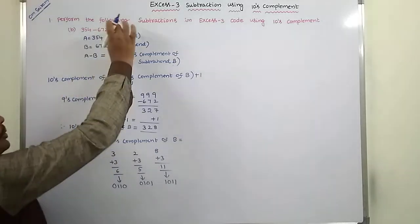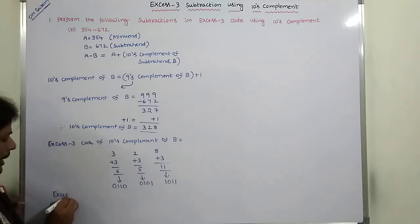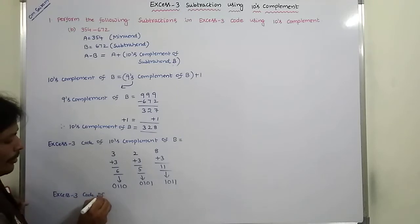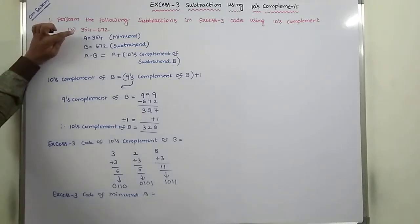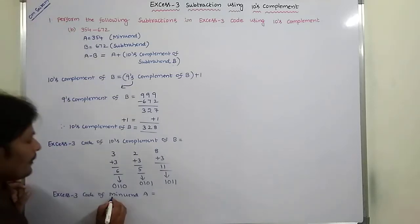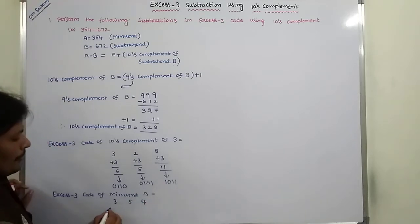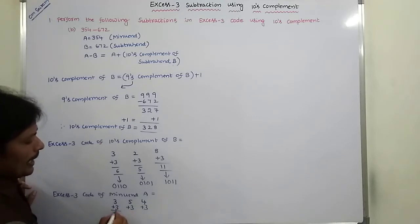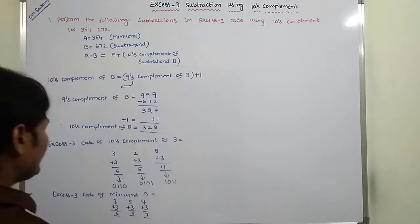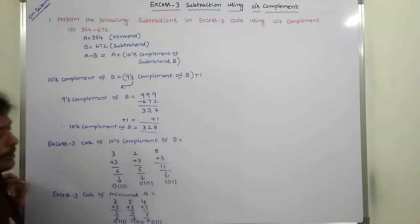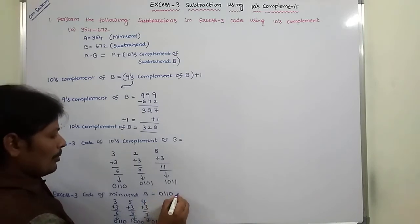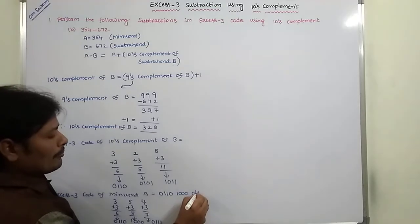Now we find the XS3 code of minuend A, which is 354. For each digit we add plus 3: 3 plus 3 is 6, 5 plus 3 is 8, 4 plus 3 is 7. Binary equivalents: 6 → 0110, 8 → 1000, 7 → 0111. So XS3 code of A is 0110 1000 0111.